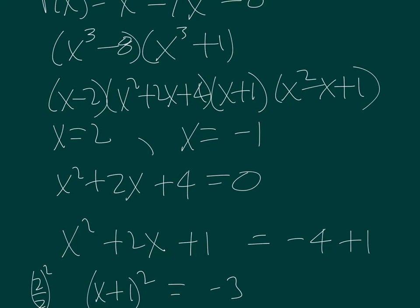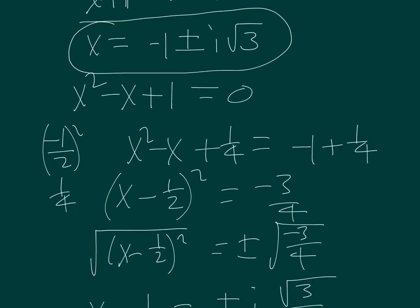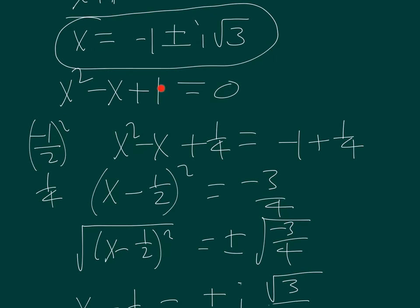So we'll set that equal to zero. And then our coefficient on x is negative one. So we'll divide that by two and square it and that will give us a fourth. So we'll move the one over. So we subtract one from both sides and add one fourth to both sides. Factoring the left we have x minus one half squared. Remember it's always going to be whatever we squared here with the parentheses with the x in our factored square. And then on the right we'll have minus three fourths.